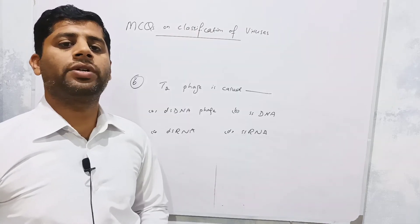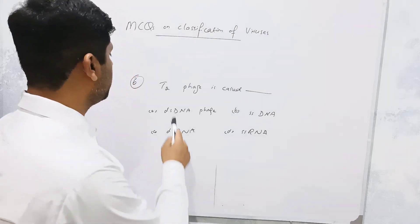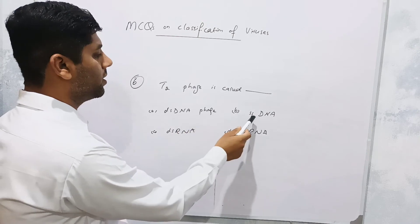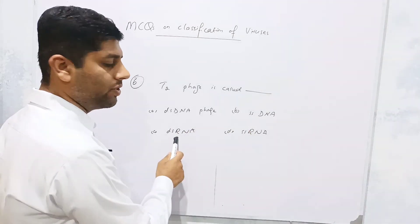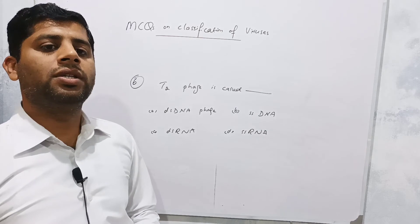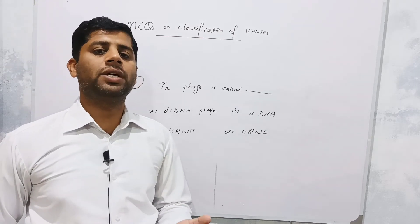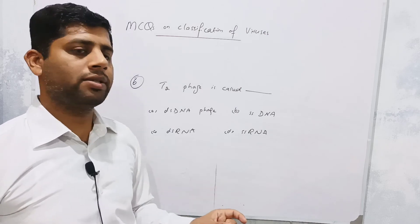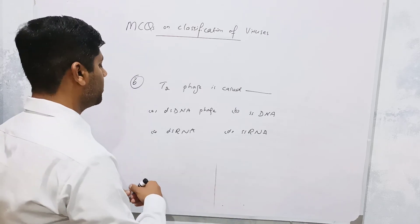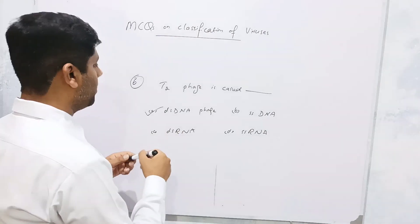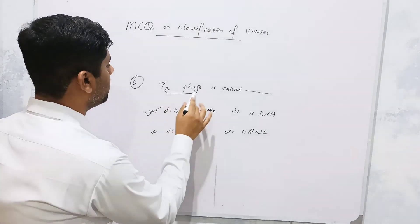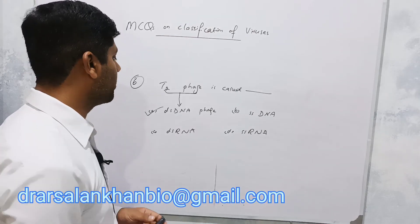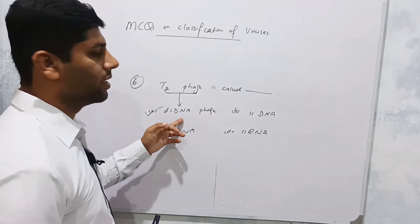The sixth and last question is about the T2 phage. The options are: double-stranded DNA phage, single-stranded DNA phage, double-stranded RNA phage, or single-stranded RNA phage. This is a factual question that must be memorized. The correct answer is option A — T2 phage has double-stranded DNA in its genome and is therefore called a double-stranded DNA phage.